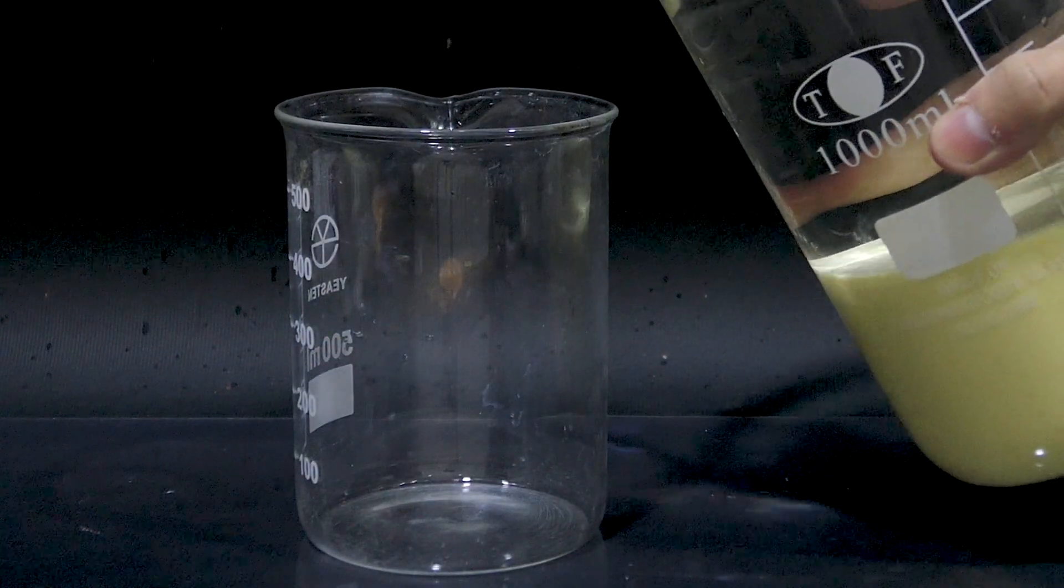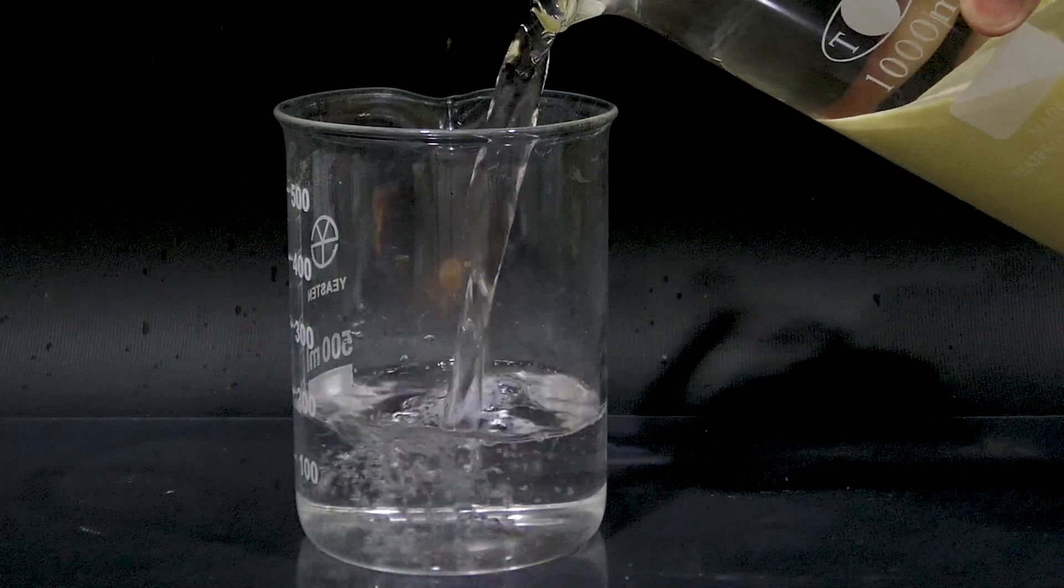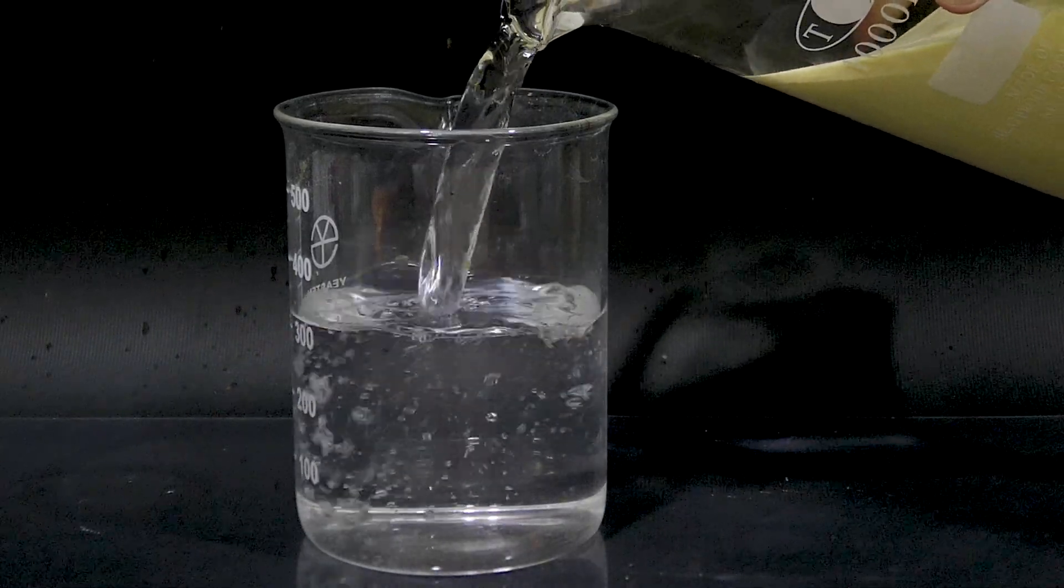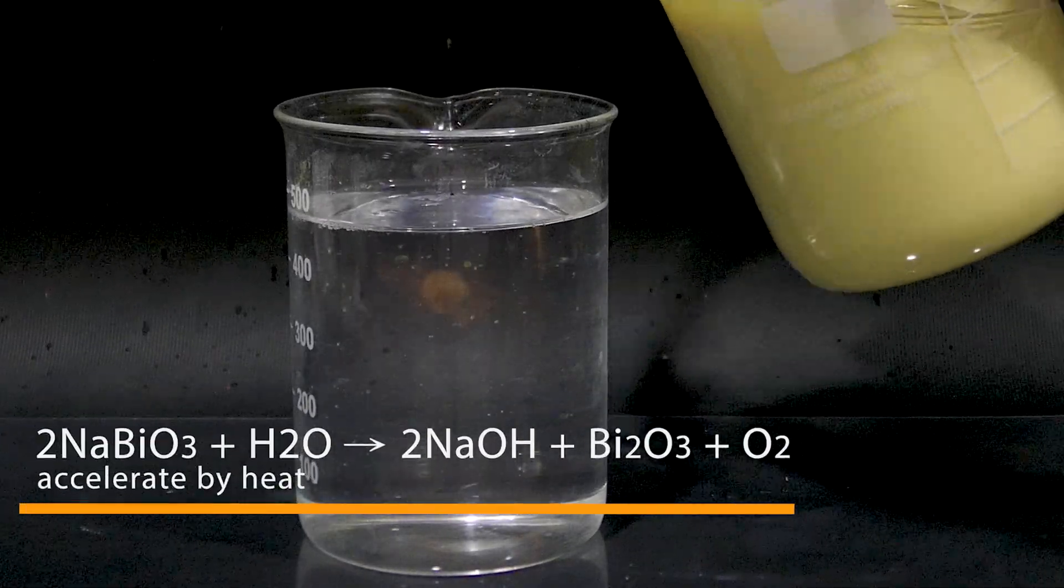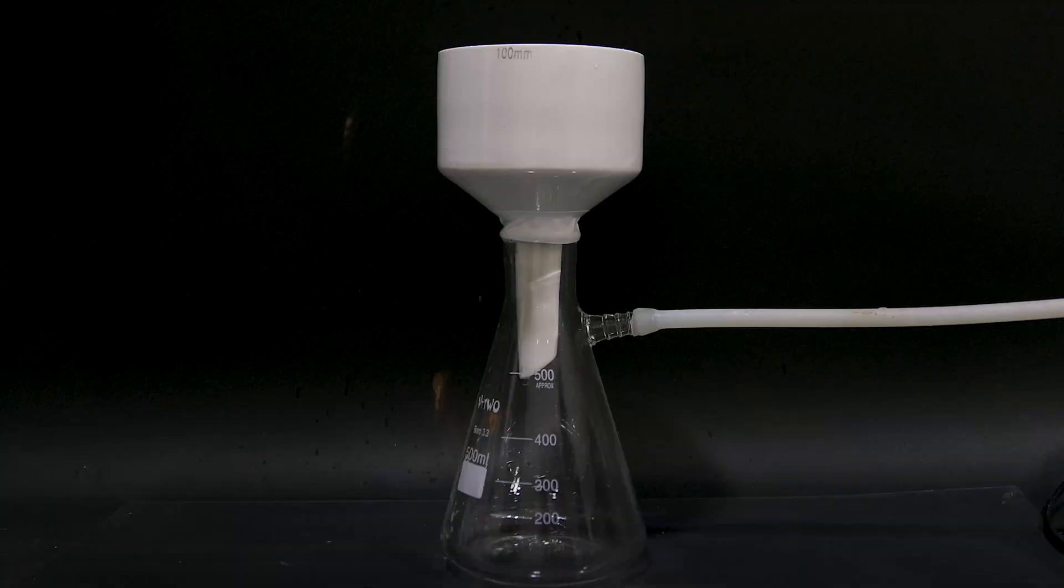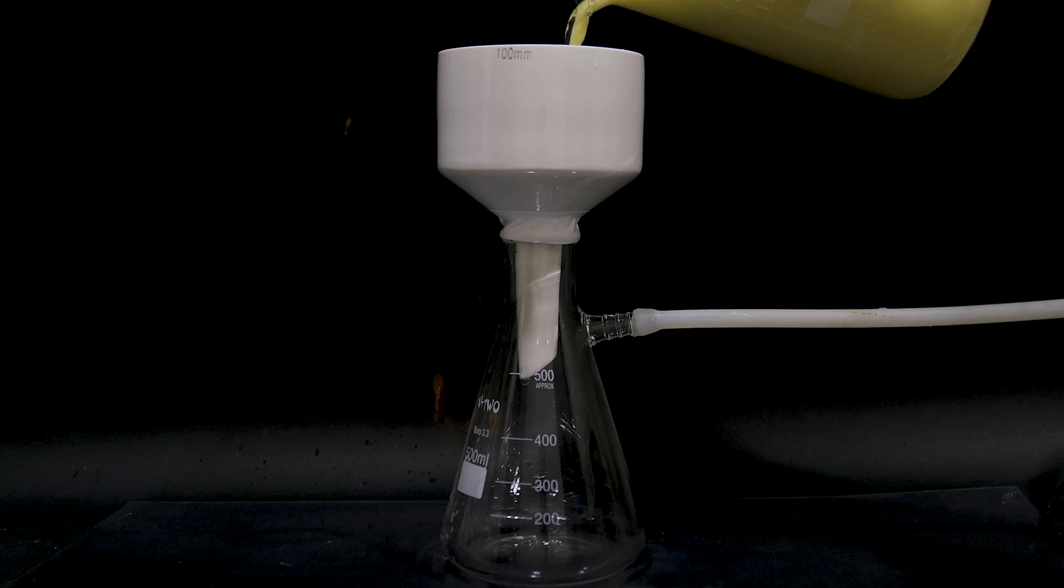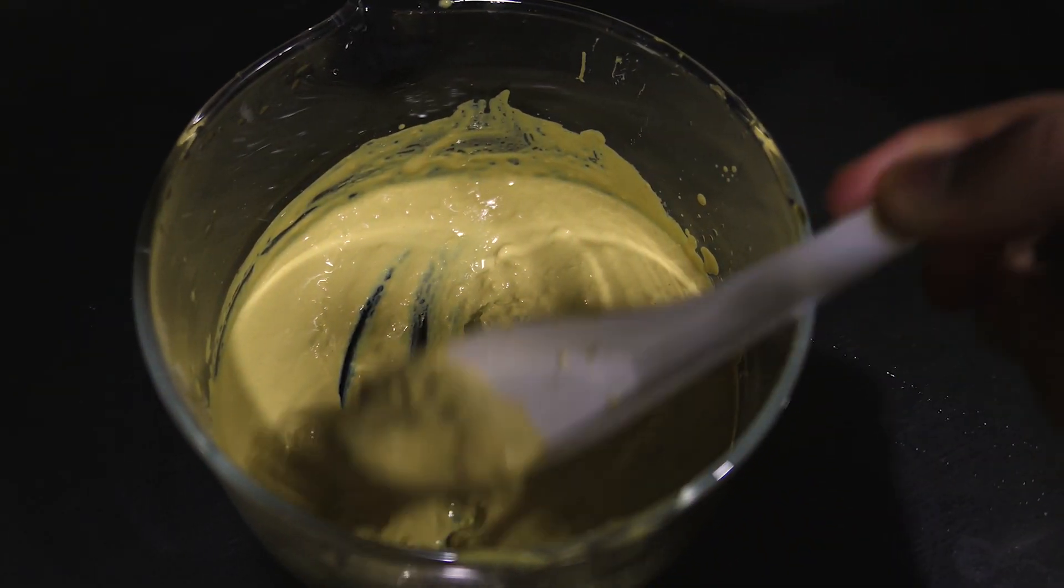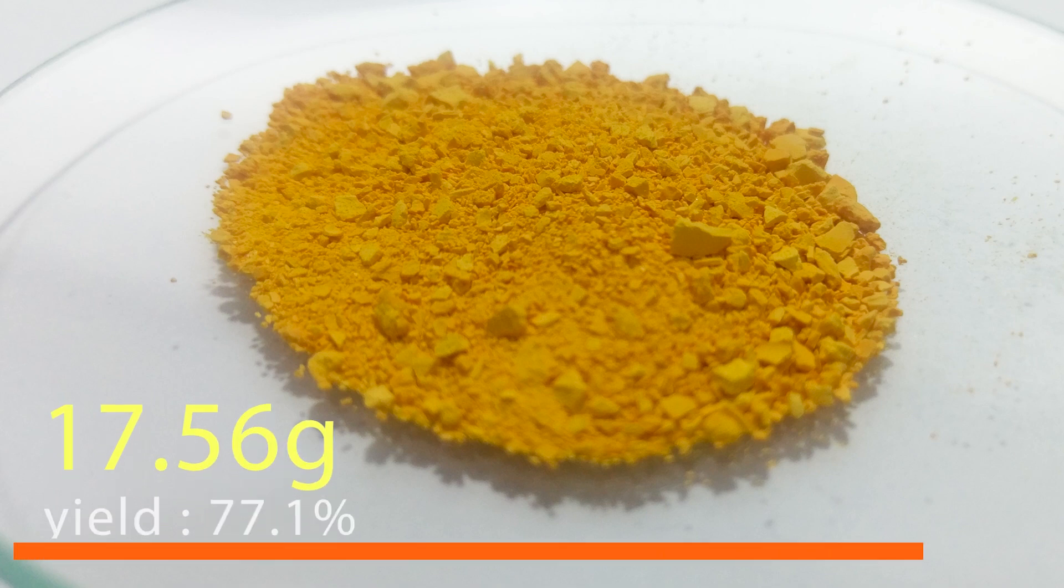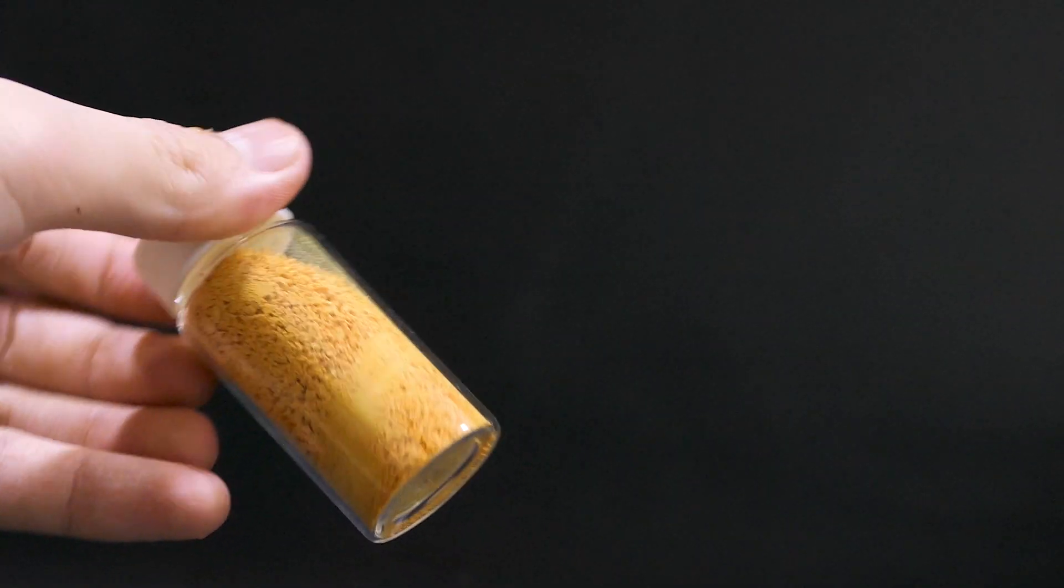When sodium bismuthate sank to the bottom, I remove most of the water. One thing you should keep in mind is that sodium bismuthate will degrade in water slowly, so you shouldn't leave it underwater for too long. Then I vacuum-filtered the sodium bismuthate. Then I put it in the desiccator to dry it. And this is the final product. It's quite interesting that yellow sodium bismuthate turned into orange, and it looked like the orange bismuth compound in the beginning of the reaction.